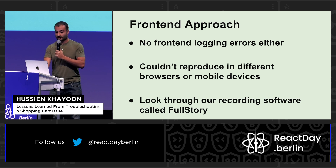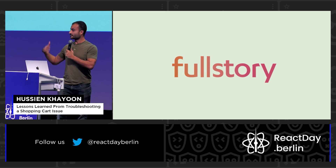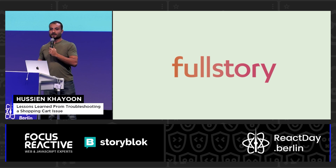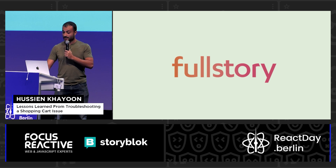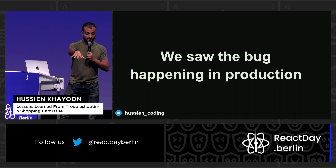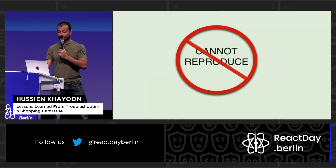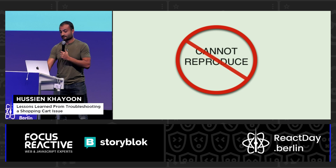Finally, we looked through our session recording software called FullStory. If you're familiar with FullStory, it's an analytics tool that allows you to record your user sessions. LogRocket is another great example for frontend developers. With this recording, I was actually able to see the bug happening in production — I saw a customer have six items in their shopping cart, and then all of a sudden it was five. I saw it with my own eyes. No denying it now. But still couldn't reproduce it.